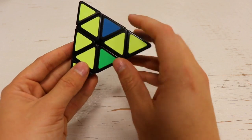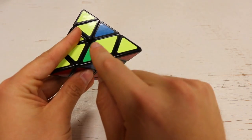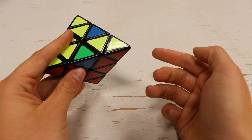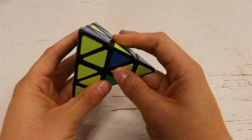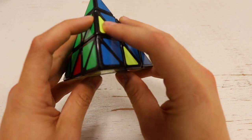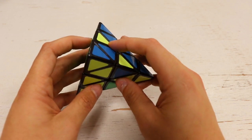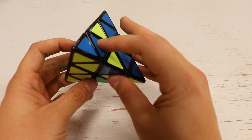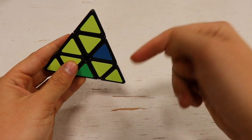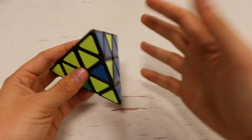Now we can align this blue and green piece back here where it belongs, where it needs to be. So since our blue is on the bottom, that means that we need to have our blue facing us. And so what we'll do is we're going to rotate this direction like so.